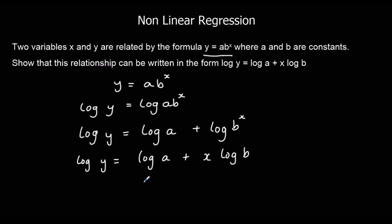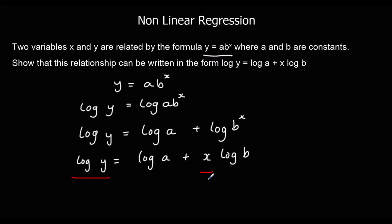This could be used to model a straight-line relationship. Log a and log b are going to be constants. So if we plotted log y against x, we would have a straight-line relationship with a gradient of log b and an intercept of log a. So we've converted an exponential relationship into a straight-line relationship that we could use to examine the correlation and examine the relationship between the two variables.